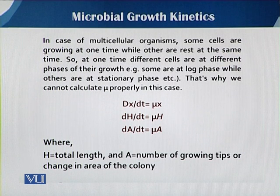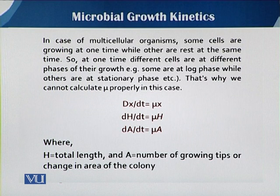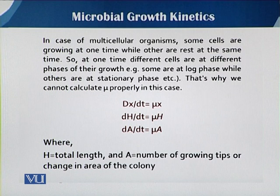We say that dX/dt is equal to mu times X. Similarly, dh/dt — the change in height divided by change in time — can be called mu times h. Sometimes growth only happens in an area, so we can write dA/dt equal to mu times A. Here, h is the total length and A is the number of growing tips or the change in area of the colony. Using these equations, we can easily calculate mu.